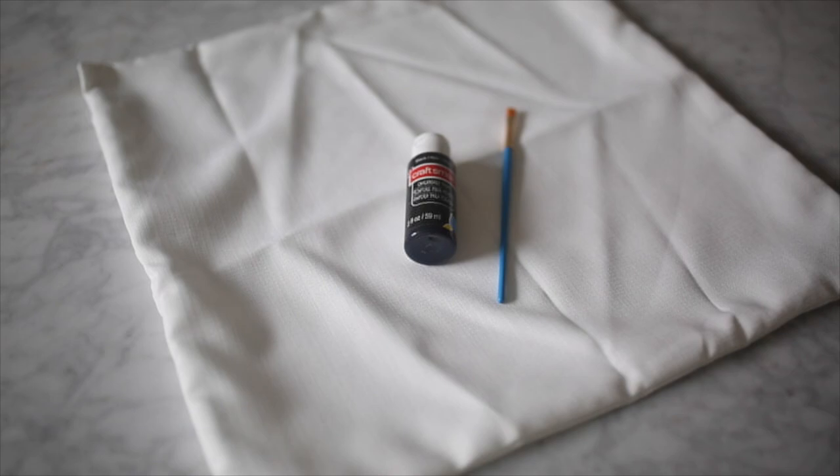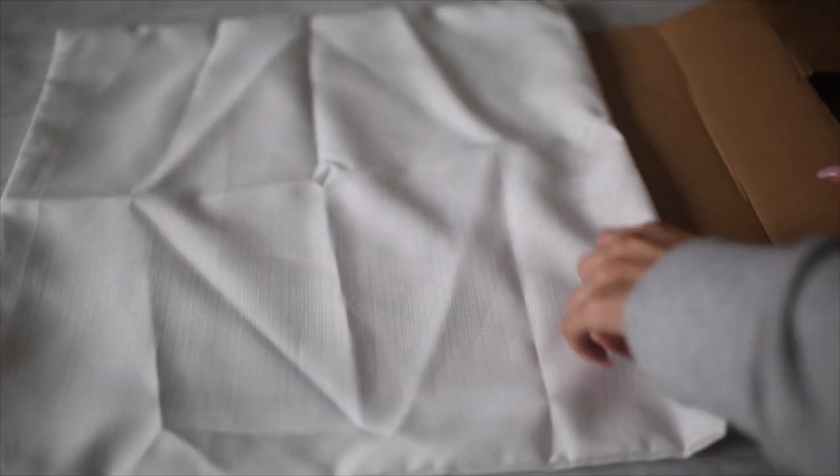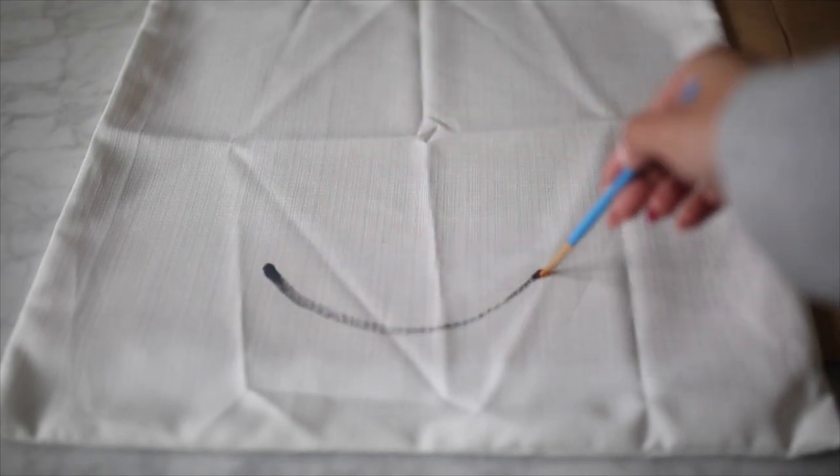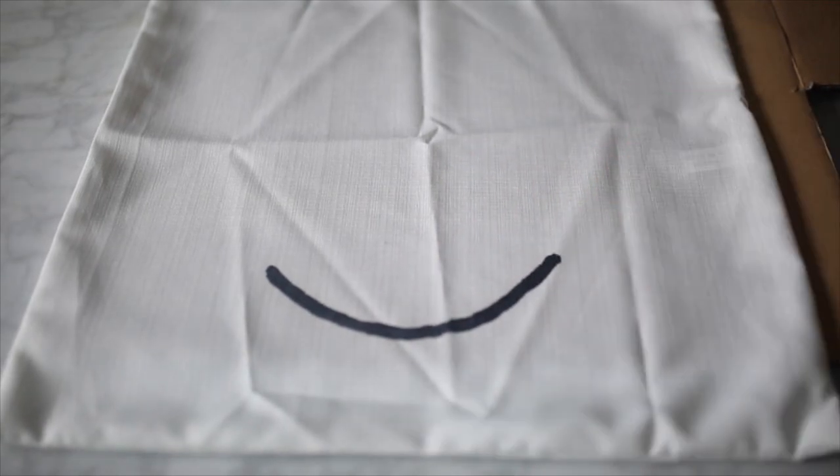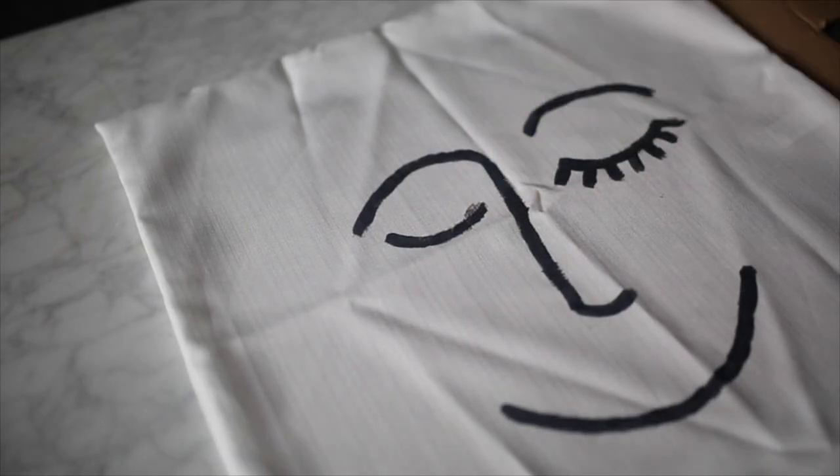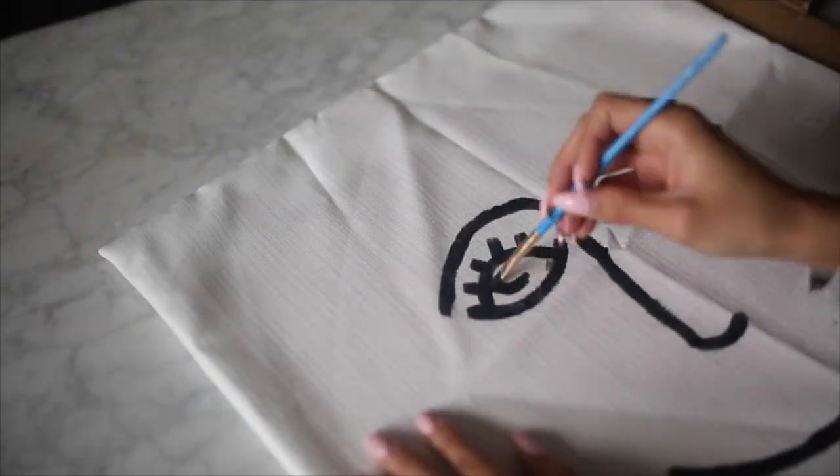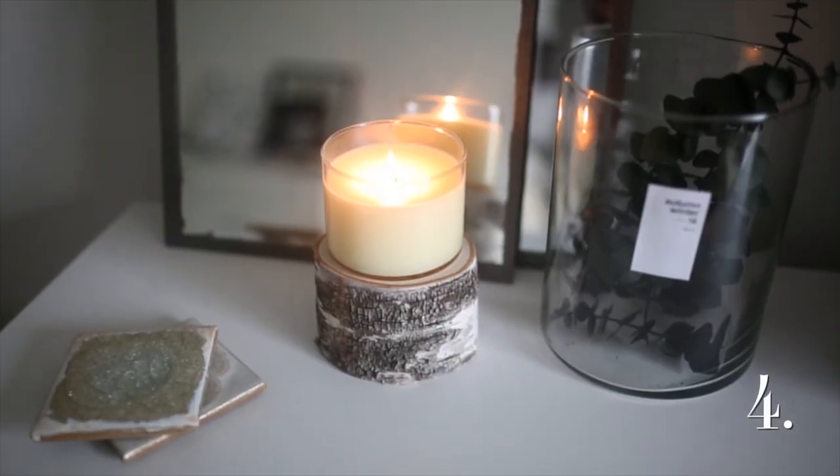DIY number three is this Urban Outfitters inspired pillow that I absolutely love. For this all you're going to need is a blank pillowcase, some acrylic paint, and a paintbrush. I began by adding a piece of cardboard into the middle of the pillowcase just so the paint doesn't bleed through onto the other side of the fabric, but that's totally optional. I'm just kind of drawing on the face. Honestly, this was inspired by an Urban Outfitters pillow, so I just looked at the photo for inspiration. I will link it down below so you guys can see it. I basically just drew it on with the acrylic paint. I started out by putting a lighter coat of the paint and then I darkened it up at the end. Acrylic paint is great because it will stay on when you wash it. That is pretty much all you do for this lovely pillow.